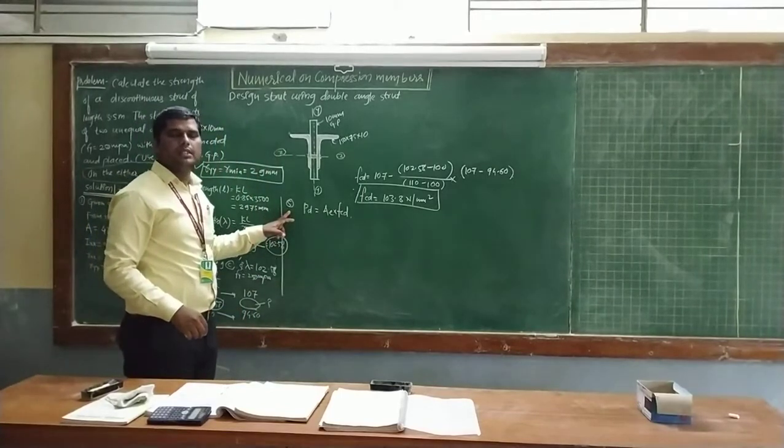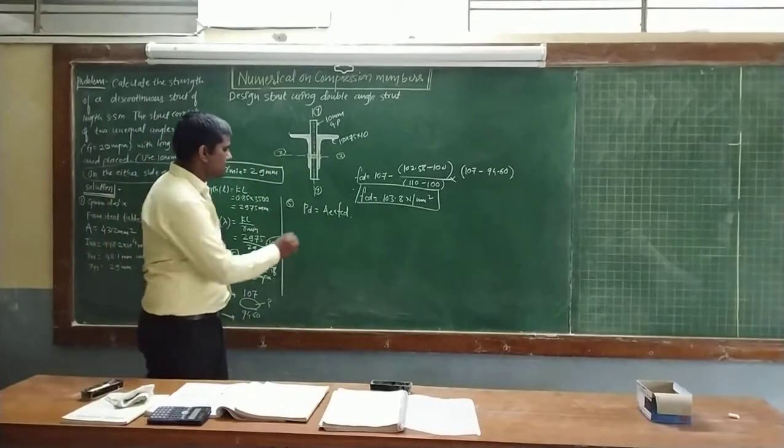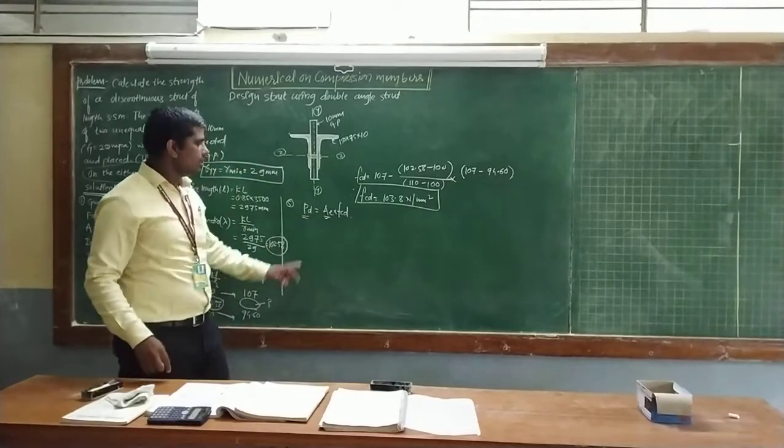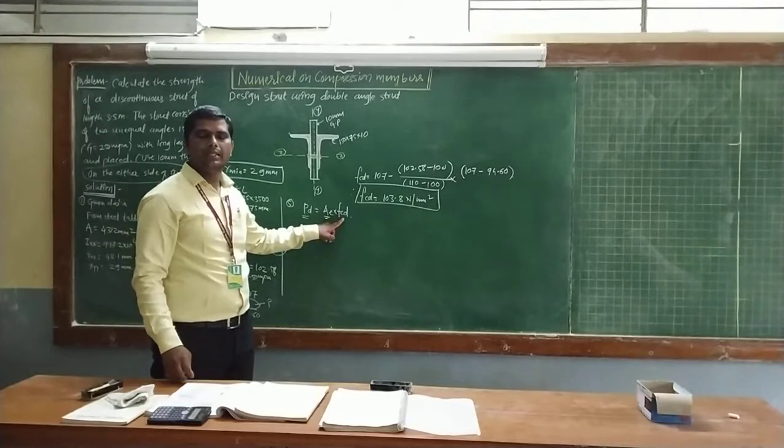Then, last, to determine the design compressive strength, PD, is equal to the effective cross-sectional area into the FCD value, that is the design compressive stress.